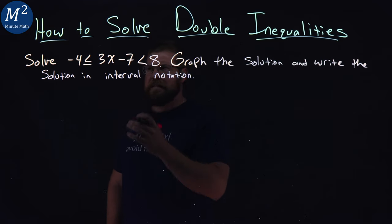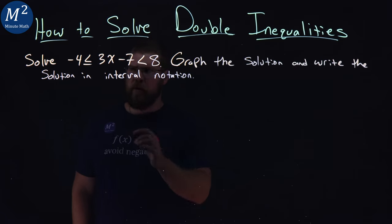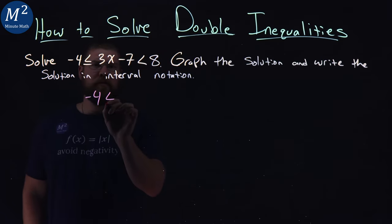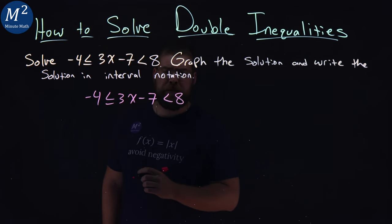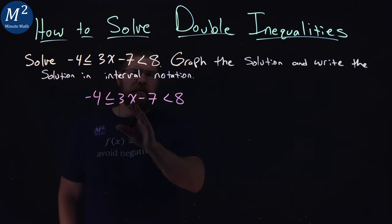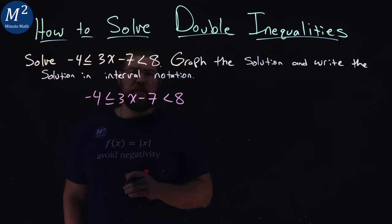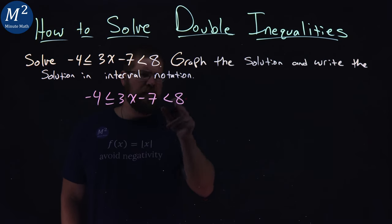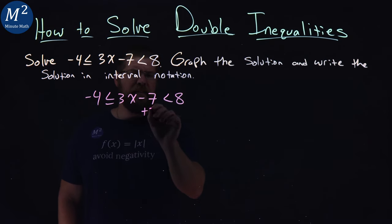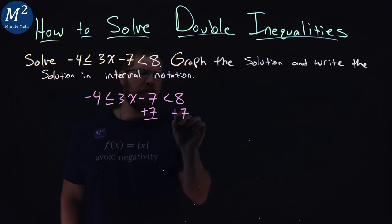So let's go rewrite this double inequality. Negative four is less than or equal to three x minus seven is less than eight. Well, normally if I ignore the negative four is less than or equal to and I just said that three x minus seven is less than eight,